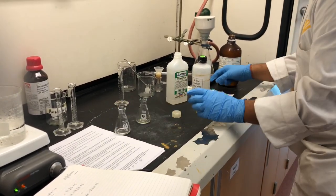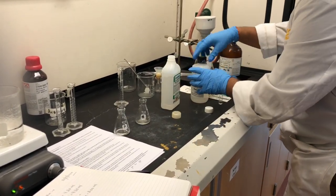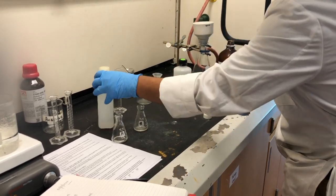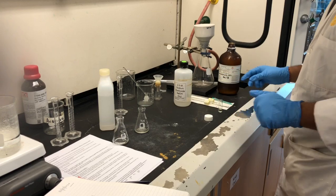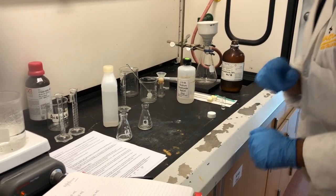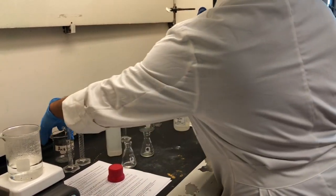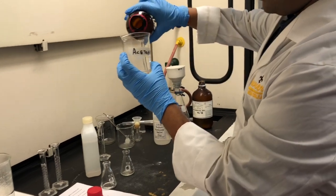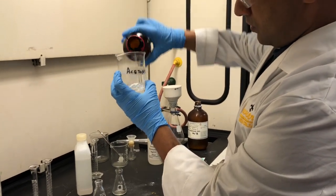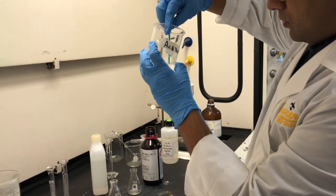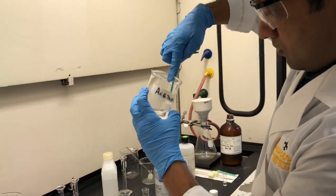Once I do benzaldehyde, what's the other thing I need? I will need acetone and I will need another syringe. And just like previously, I will transfer some of the acetone in a beaker and I will take 1 ml of acetone.